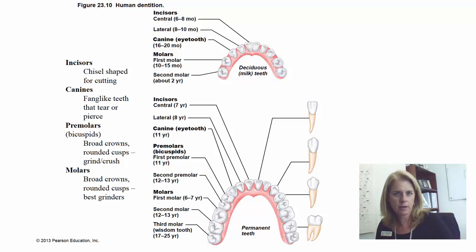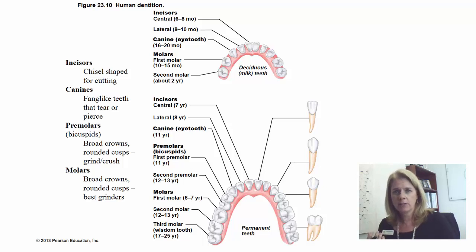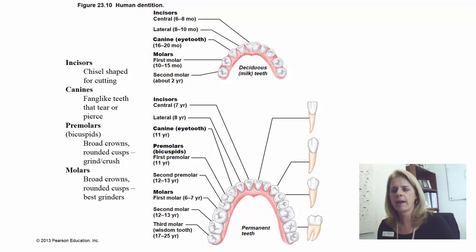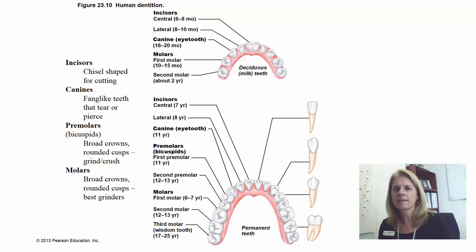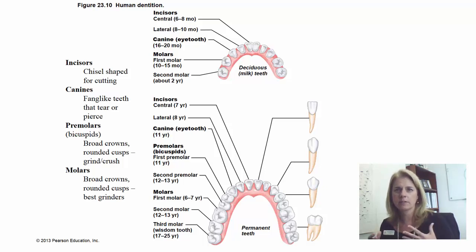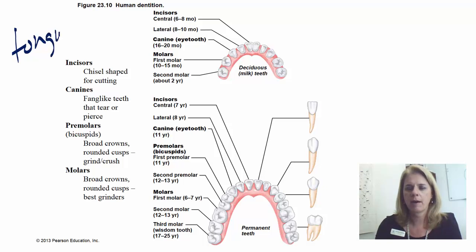Inside your mouth you have your tongue. The tongue is that big muscle you need for speech and for chewing, and it's used to push food to the back of the mouth. Some of you may have covered the tongue in detail in A&P 201, some may not. We're not going to talk a lot about how it works here — it's a pretty amazing organ so I encourage you to Google it — but you should know the tongue is part of the mouth.